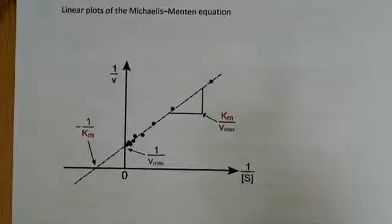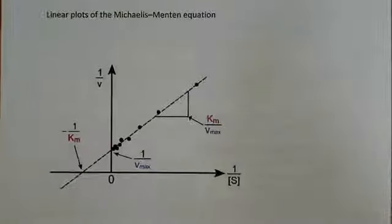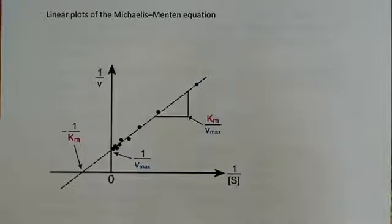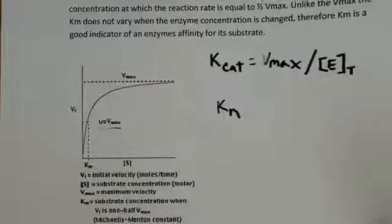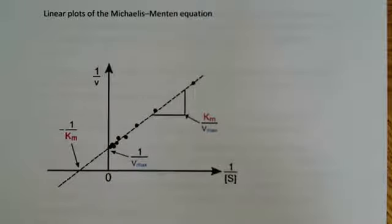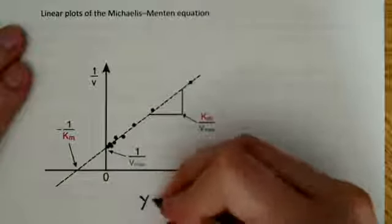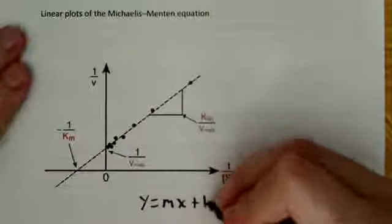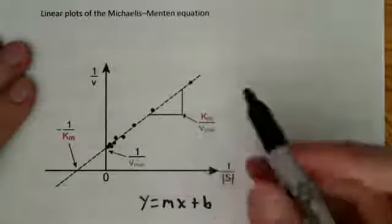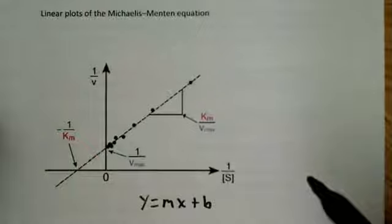Moving on, I want to bring up the Lineweaver-Burk plot, also called a linear plot. This is a representation of the same information — the exact same thing as the hyperbolic graph — but modeled in the form of a straight line. This is extremely helpful because if we go back to basic algebra, we have a line, and we remember that the equation of a line is Y = MX + B. If we look at this line and what these representations are, just like in algebra, we want to know about the x-intercept and y-intercept.